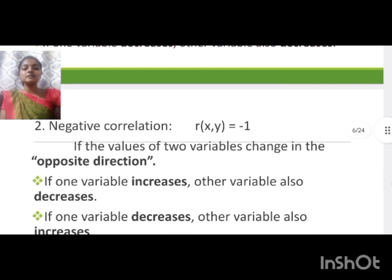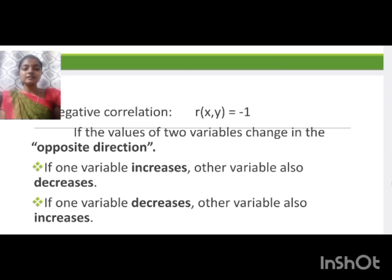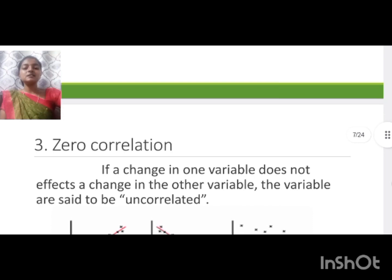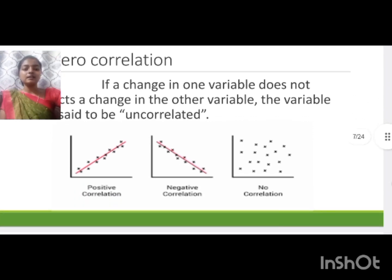In zero correlation, the variables are said to be uncorrelated. This means a change in one variable does not affect a change in the other variable.